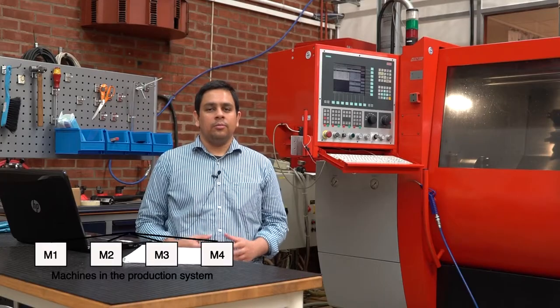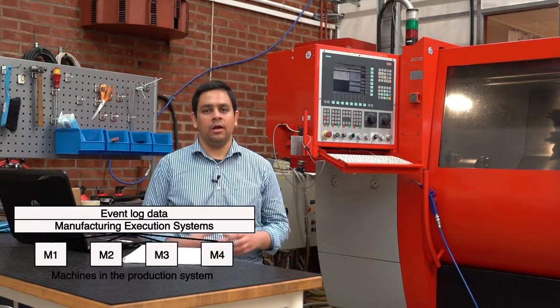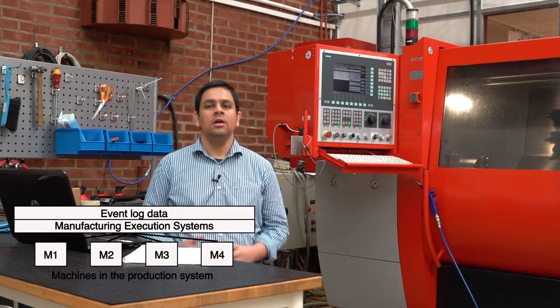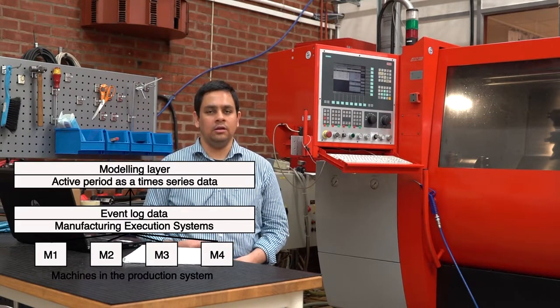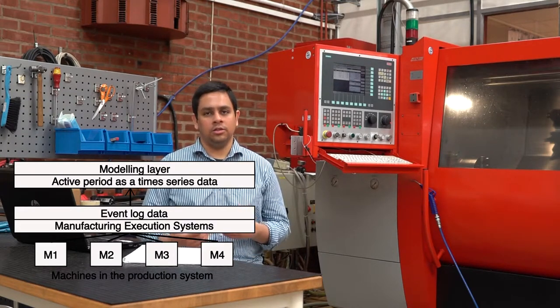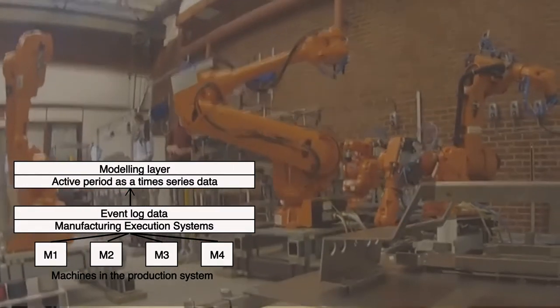The machines in the production system generate a lot of event log data. The manufacturing execution system, which collects data about the machines, stores the states of the machines and the corresponding timestamps of those states. This data can be used to model the machine into an active period state, and when these active period states are collected in a chronological way, we have a time series of historical active periods.